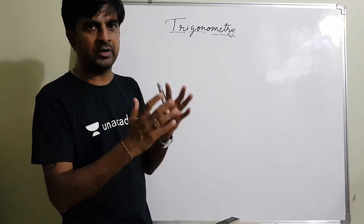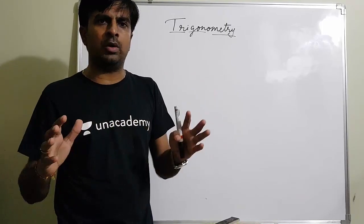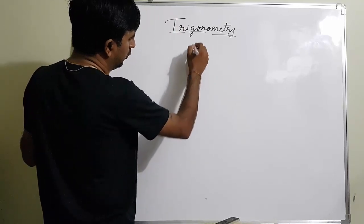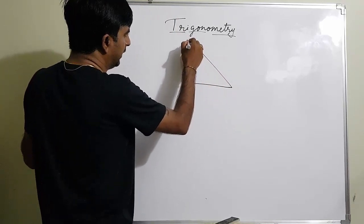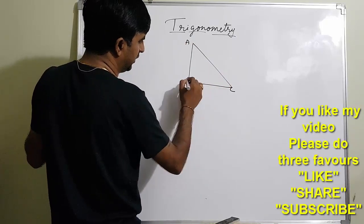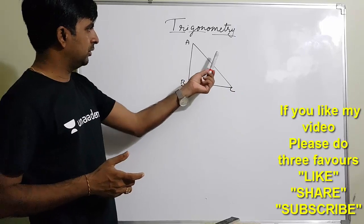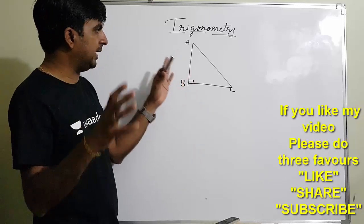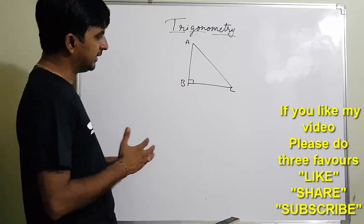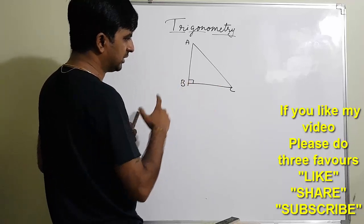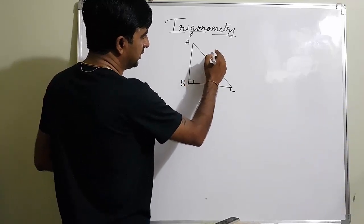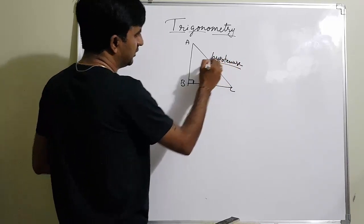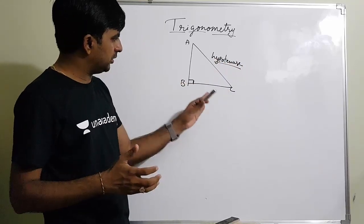Today we are going to study the basics, or the introduction part, of trigonometry. Trigonometry is all about a right angle triangle — three-side measurement. This triangle has three sides. One side is always opposite to the right angle, and that side is called the hypotenuse.